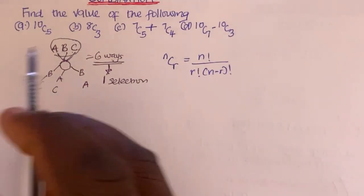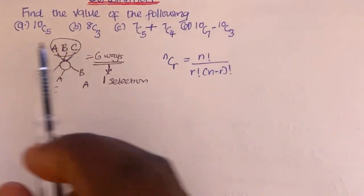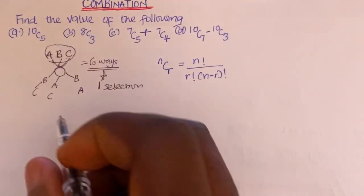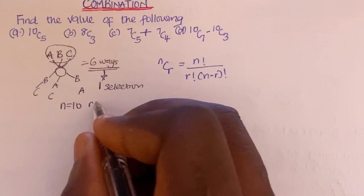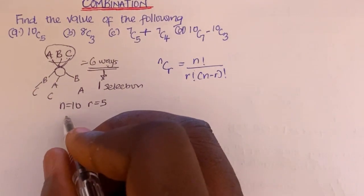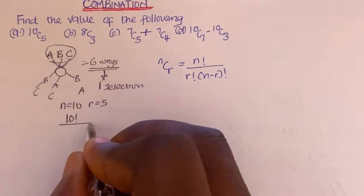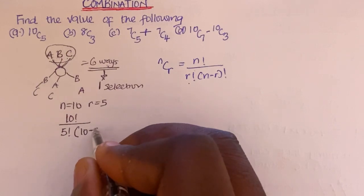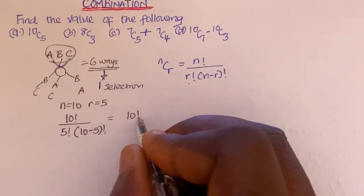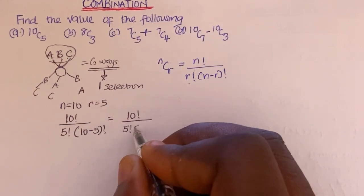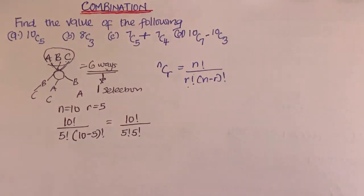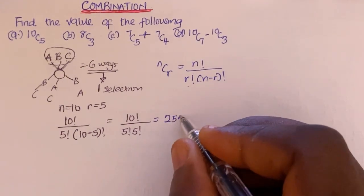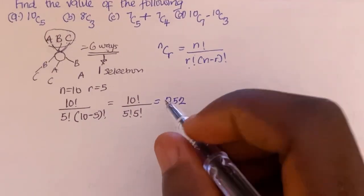Now let's use this formula to evaluate the given questions. The first one has n = 10 and r = 5. Using the formula, we get 10! divided by (5! × (10 − 5)!), which is 10! divided by (5! × 5!). If you simplify this, you get 252.